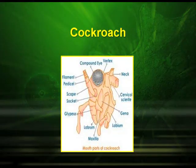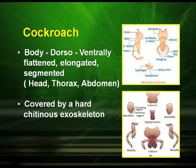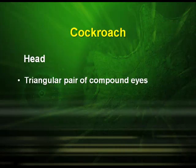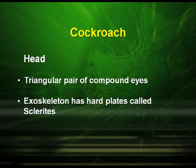Regarding the morphology of cockroach, the body is dorso-ventrally flattened, elongated and segmented. The body is divided into three portions: the head, thorax and abdomen. It is covered by a hard chitinous exoskeleton. The head is triangular shaped and has a pair of compound eyes. The exoskeleton has hard plates which are called sclerites.